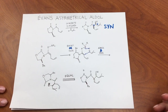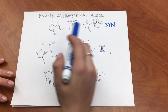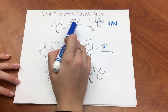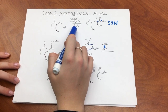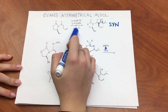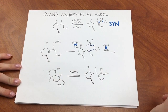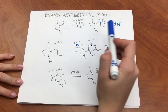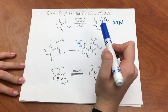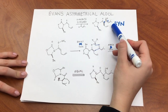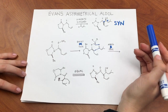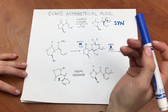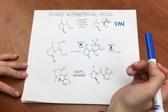This aldol reaction involves a ketone electrophile and an aldehyde starting material. The product of the reaction results in an opposite chiral auxiliary with a syn product, produced via the Z-enolate.